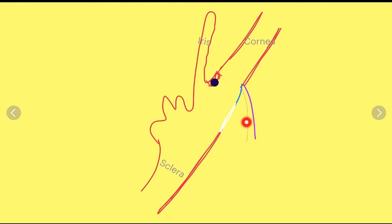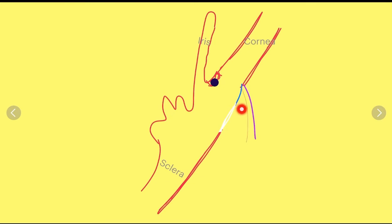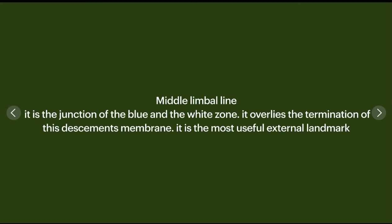This thin line represents Tenon's capsule, and the violet area denotes the conjunctiva. They are actually adherent to the sclera, but for illustration purposes they have been dissected out. The anterior limbal border is where Tenon's and conjunctiva attach. The mid limbal border is the junction of the blue zone and the white zone — a very important surgical landmark, as it also marks the termination of Descemet's membrane.